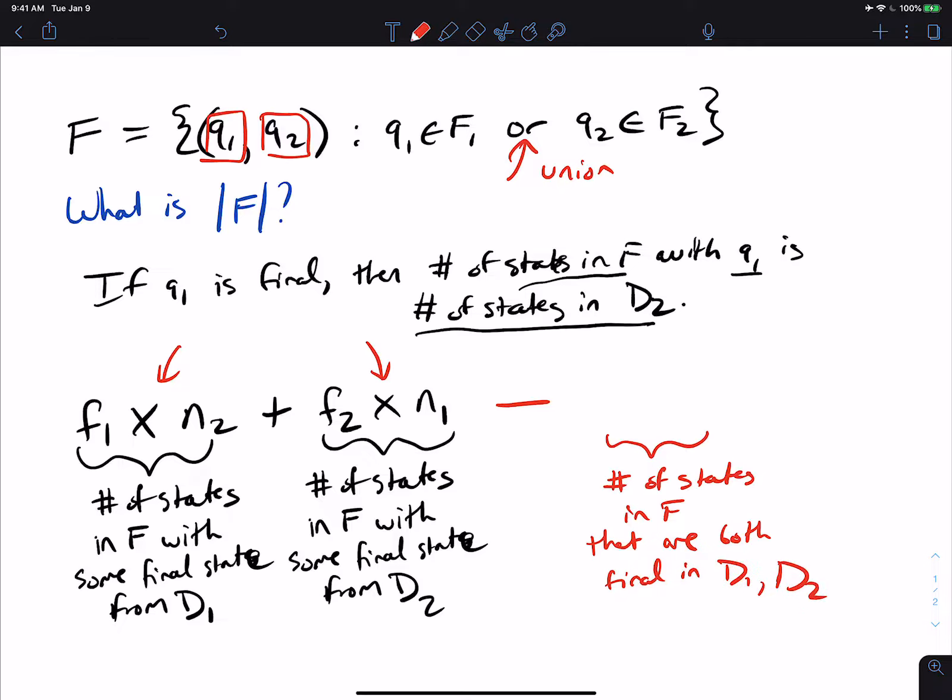So number of states in F that are both final in D1 and D2. Well, the ones that are both final, well, they have to have the first one being final, which is F1 possibilities. And they have to have the second one being final, and they're independent of each other. So we have times F2 here.